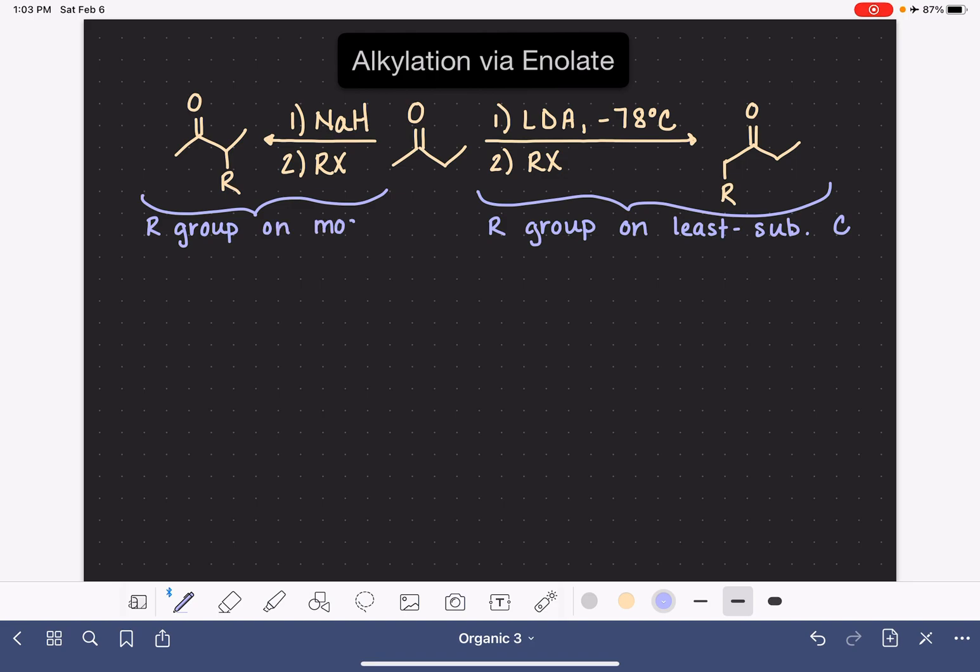In this reaction, we are using a small base, the hydride, which shows preference for removing the alpha hydrogen from the most substituted carbon, giving us the most stable enolate.